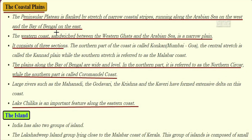The coastal plains: the Peninsular Plateau is flanked by a stretch of narrow coastal strip running along the Arabian Sea on the west and the Bay of Bengal on the east. The western coast is sandwiched between the Western Ghats and the Arabian Sea and is a very narrow plain. It consists of three sections: the northern part is known as Konkan (Mumbai–Goa region), the central stretch is known as Kannad Plain, and the southern stretch is referred to as the Malabar Coast.